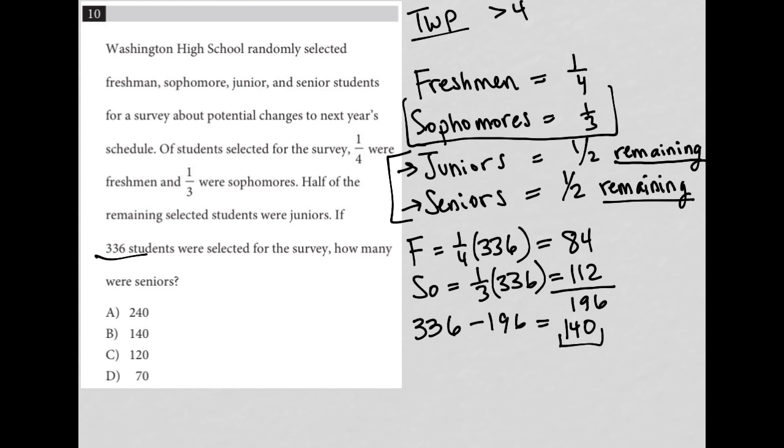Okay, so out of 140, we split that in half, right? 70 were juniors, and the other 70 were seniors. The question asks us for how many were seniors. And therefore, our answer here is choice D.